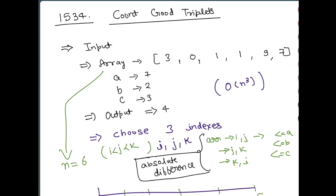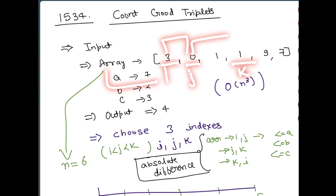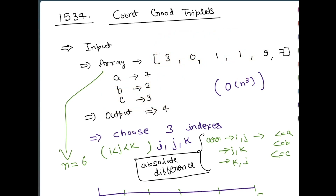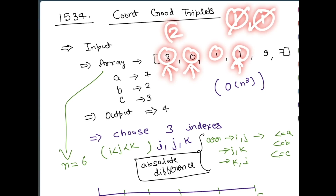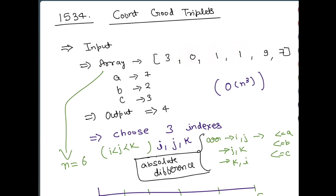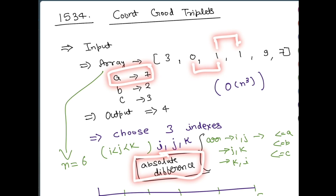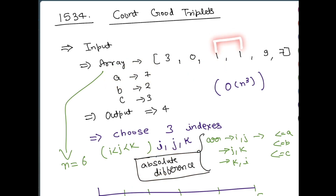In simple words: choose any three indexes i, j, k; check that the difference between the first two numbers is less than or equal to a, the difference between the next two numbers is less than or equal to b, and the difference between the first and third number is less than or equal to c. When I talk about difference, I mean the absolute difference — it will always be positive, never negative. In the example array, the output is 4. For example, the triplet 0, 1, 1: the difference between 0 and 1 is 1, which is less than or equal to a (which is 7); the difference between 1 and 1 is 0, less than or equal to b (which is 2); and the difference between 0 and 1 is 1, less than or equal to c (which is 3). So 0,1,1 is a valid good triplet.